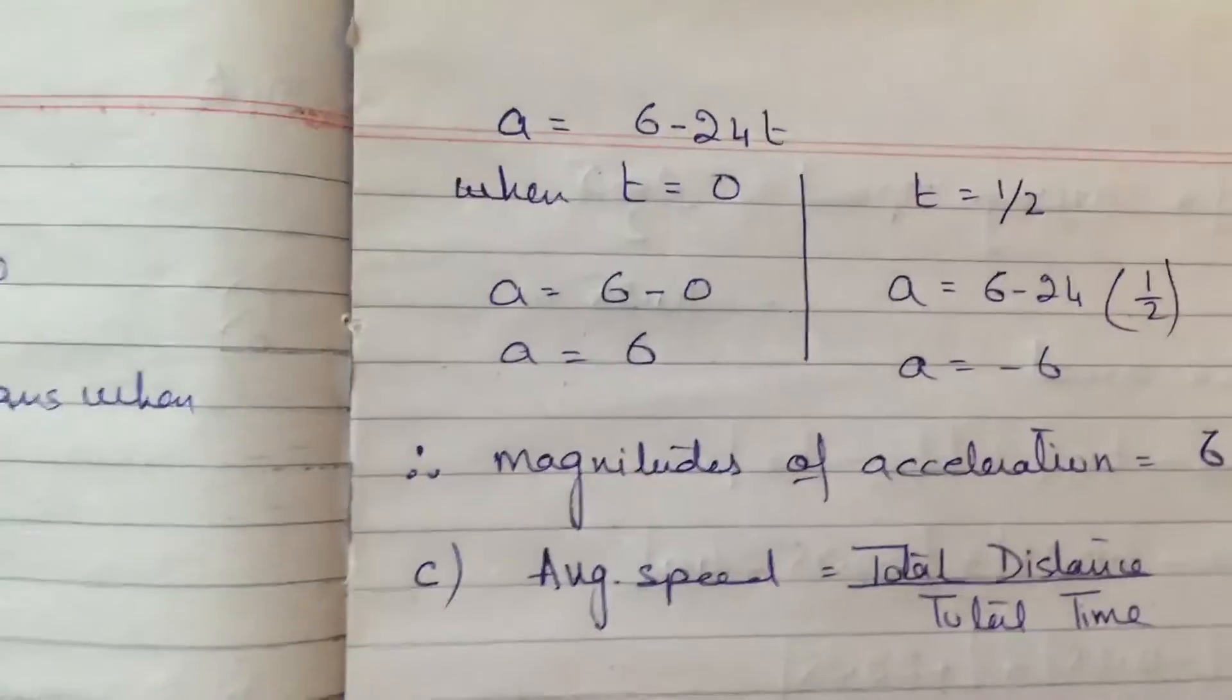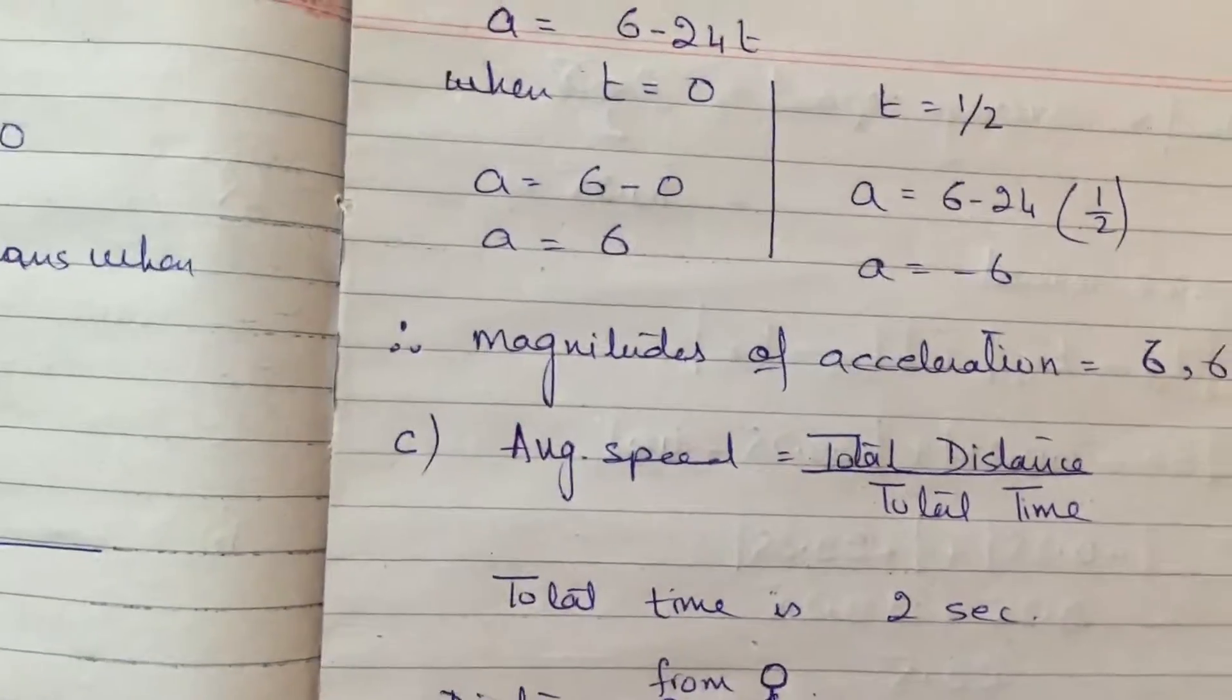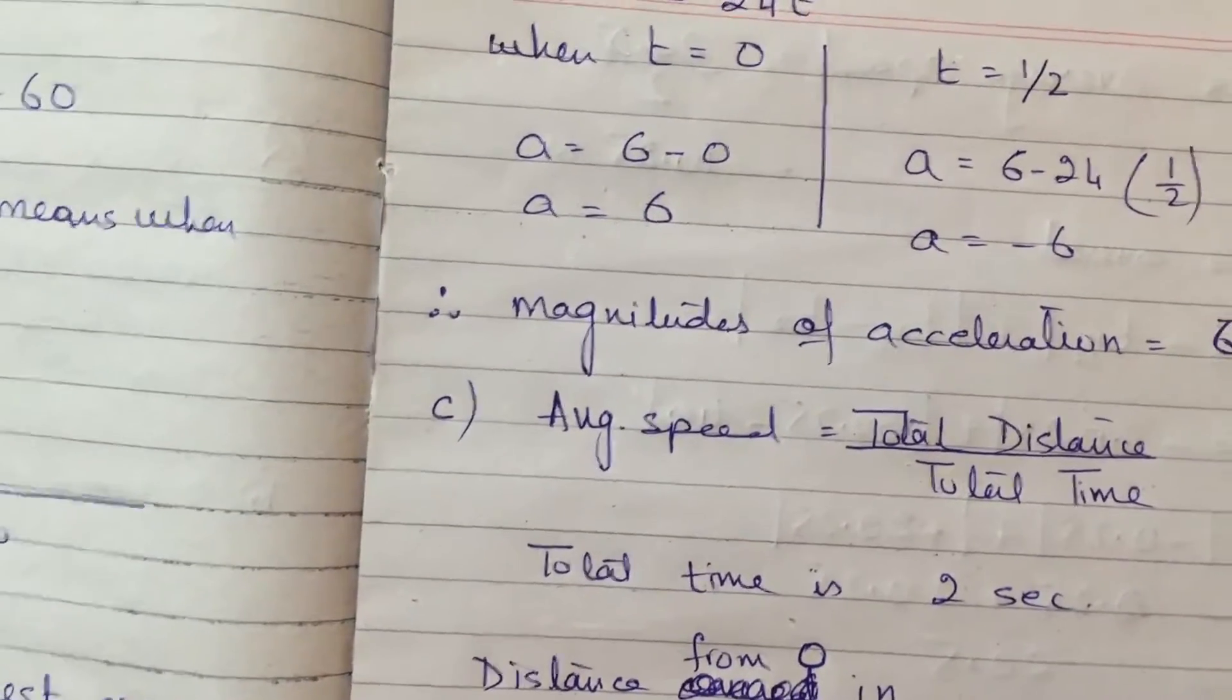The last part of the question is saying find out the average speed in 2 seconds. Now average speed is total distance over total time.